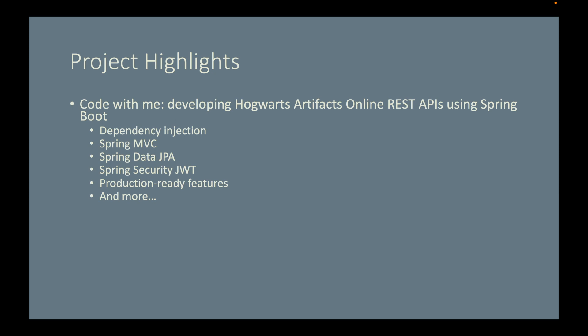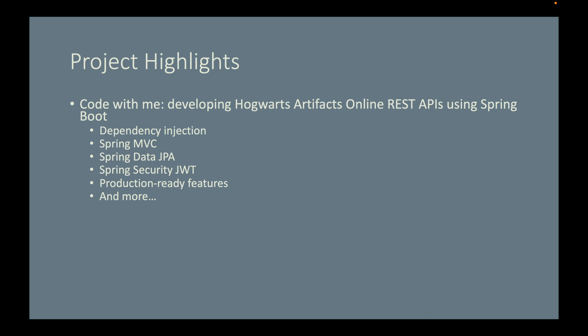You will use Spring Data JPA to persist data to a relational database. JPA stands for Jakarta Persistence API. You will use Spring Security with JWT to secure API endpoints — JWT stands for JSON Web Token. You will also use some Spring Boot production-ready features to monitor and manage your application when you push it to production, and more.